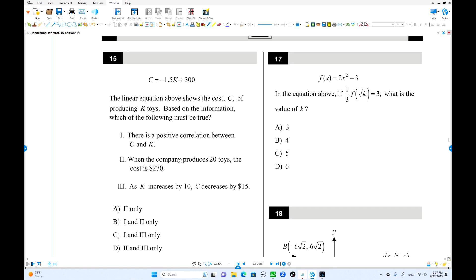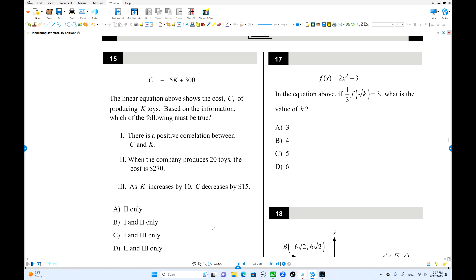Number 15. C equals negative 1.5K plus 300. That is a linear equation. This is y intercept. This is the slope. And now check it out. There is a positive correlation. No. Slope is negative. There is a negative correlation. That's wrong. When the company produces 20 toys. If 20 toys, this is 20. Total cost is 270. Check it out. C equals negative 1.5 times 20. That is 30 plus 300. That equals 270. This is true.